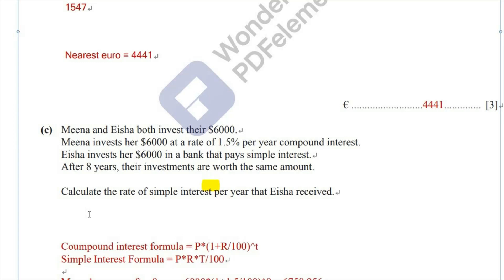The difference between the compound interest formula and the simple interest formula is that when you use the compound interest formula, it gives you the total amount — the amount you invested plus the profit you gain. But in simple interest, when you use this formula, you only get the profit. That profit is not added to the initial amount.